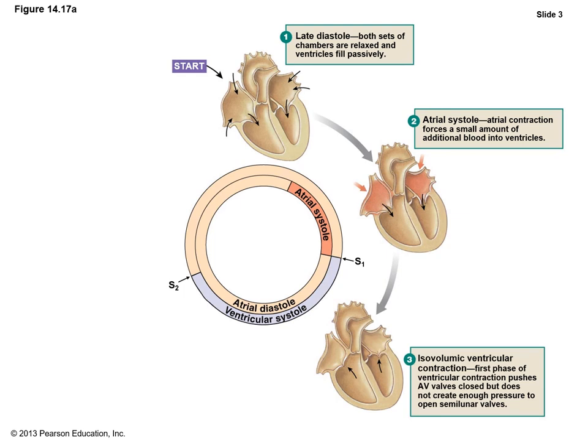From atrial systole, we go into early ventricular systole — the isovolumic ventricular contraction phase. Isovolumic means there's no change in volume during this phase. The ventricles begin to contract, pressure increases, but blood does not flow out yet — it won't flow out until ventricular pressure is greater than that of the vessels. During isovolumic contraction, we hear the first heart sound: LUP. The LUP sound is the sound of the AV valves closing — the bicuspid and tricuspid valves.